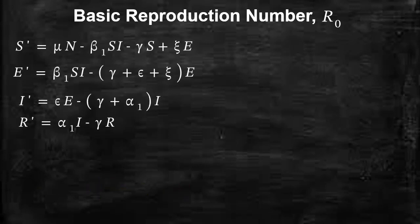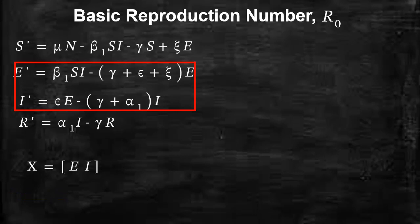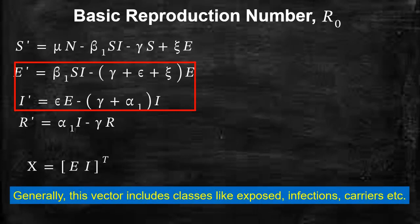After having the disease-free equilibrium, now let's identify the vectors of infected classes and the uninfected class. For the infected class, we represent it by vector X, and this will comprise E and I.